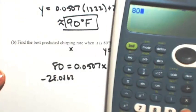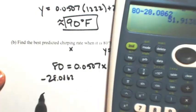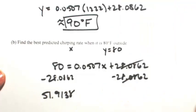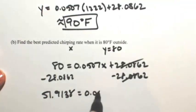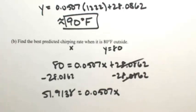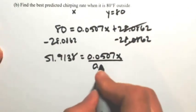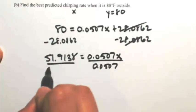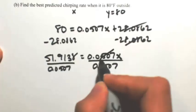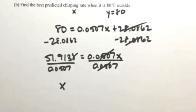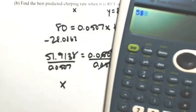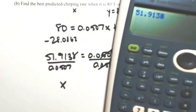So 80 minus 28.0862 is 51.9138. Okay, so this is multiplication, so now I will divide. So the best predicted chirping rate is going to be 51.9138 divided by 0.0507.